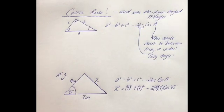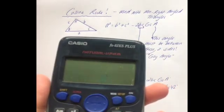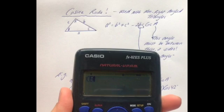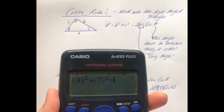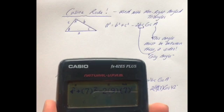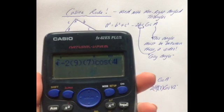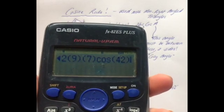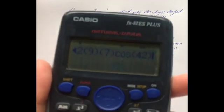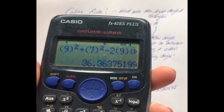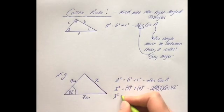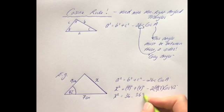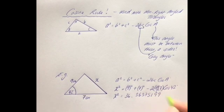The calculator is going to do the majority of the work, so type it in exactly as written: bracket 9 squared, close bracket, plus bracket 7 squared, close bracket, minus 2, bracket 9, close bracket, bracket 7, close bracket, cosine bracket 42, close bracket. The result is 36.36375199 — don't round too early as that would affect overall accuracy.